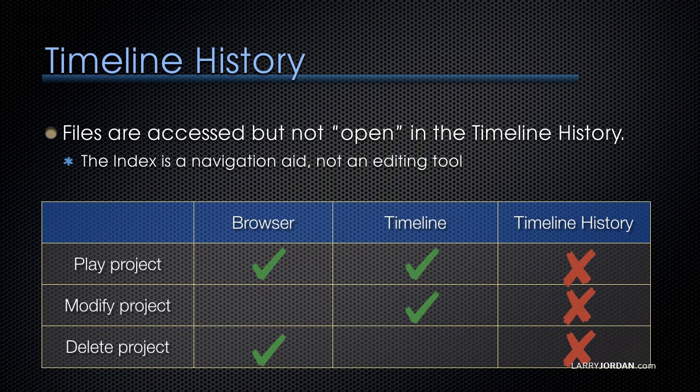Rendering is not going on in the background when that project is in the history panel. I can delete a project in a browser, but I can't delete a project in a timeline — I can modify it, delete clips, but I can't delete the project. In the timeline history, I can't do any of those things. The timeline history is a navigation aid, which allows me to move between projects that I've already opened in the timeline.